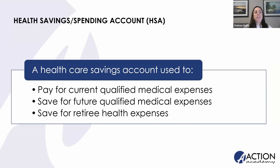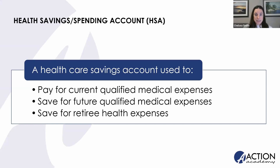Let's start with health savings accounts. HSAs may be used by consumers to pay current qualified medical expenses like over-the-counter items, as well as fees charged by providers and pharmacies — like co-pays and costs of your drugs. You can also use this money to save for future qualified medical expenses, and you can use it to save for your retirement — any health expenses you might incur after you retire and no longer receive health insurance through your employer.